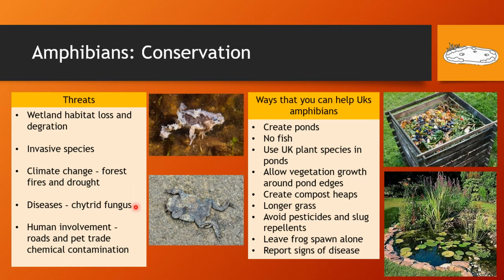In the UK, the biggest threat is mostly through human involvement — the construction of roads and road deaths. It's a fairly common sight to see a toad or frog killed on a road in the UK. Another threat is the pet trade, which also links to invasive species. Many wild frog species come in bright colours and are very appealing to collectors and can sell for a lot of money, so people are collecting them from the wild and putting them into the pet trade.